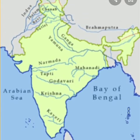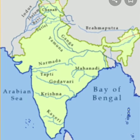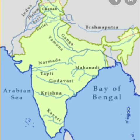India's drainage system is divided into two parts. When we define the Indian drainage system, we have two parts: one is the North Indian drainage system and the other is the South Indian drainage system.